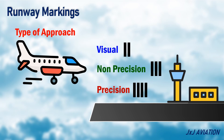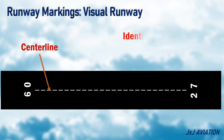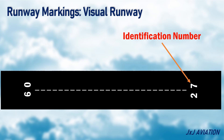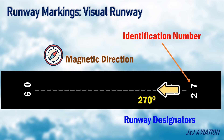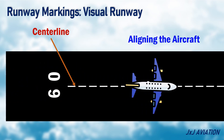So first, let's look at the markings on a visual runway. These runways are marked with a dashed centerline and runway identification number. Runway identification numbers, or runway designators, are numbers which mention the magnetic direction towards which the runway is pointing. These numbers are rounded to the nearest ten. The centerline markings are white dashed lines running down the middle of the runway, used for aligning the aircraft on the center of the runway during takeoff and landing. These are the dimensions of the white stripe and the gap between the stripes.